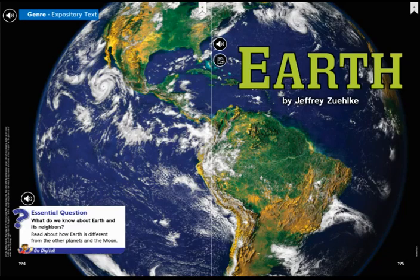From the summary, I learned that we're going to be reading about Earth and what makes it special. And we're also going to be learning about the other planets and objects in our solar system. Let's check out the essential question. What do we know about Earth and its neighbors? Read about how Earth is different from the other planets and the Moon. Let's get started.